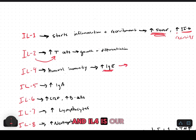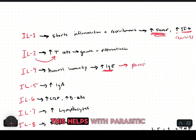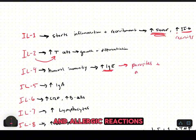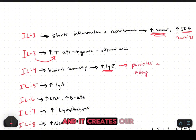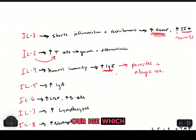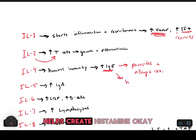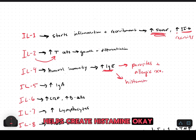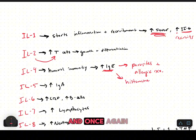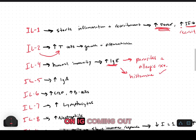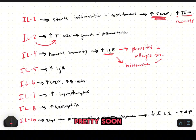Interleukin four is our humoral immunity. It helps with parasitic and allergic reactions and creates IgE — our immunoglobulin E — which helps create histamine. Watch our other video on immunoglobulins coming out pretty soon.